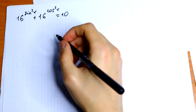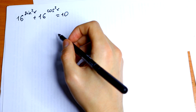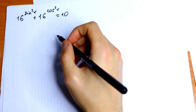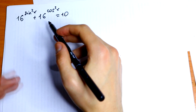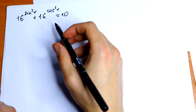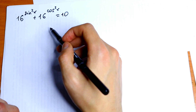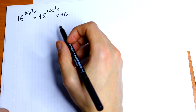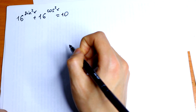Hello everyone, welcome back to MathMood. Here we have an interesting exponential equation in trigonometric form: 16 to the power sine squared of x plus 16 to the power cosine squared of x equals 10.